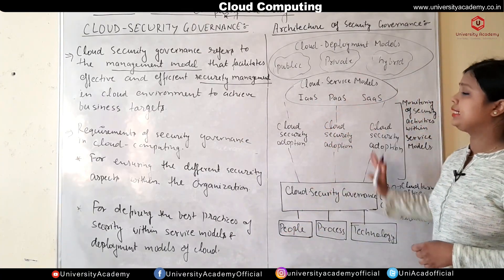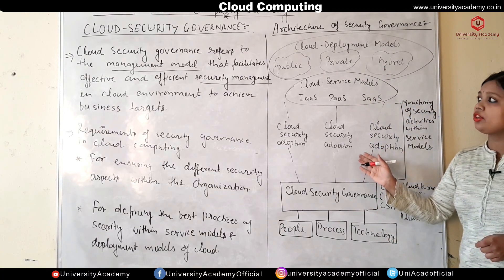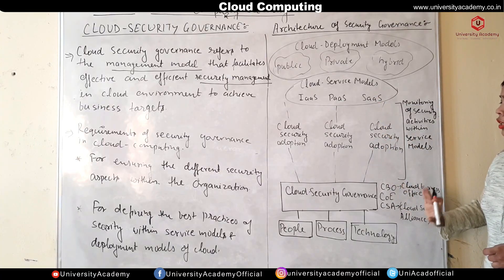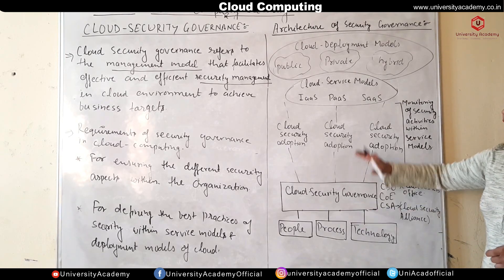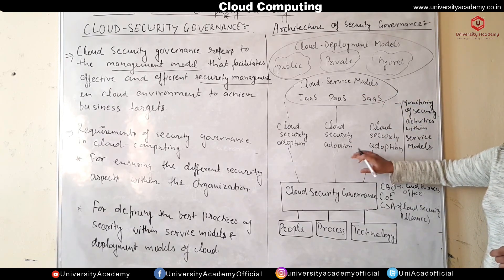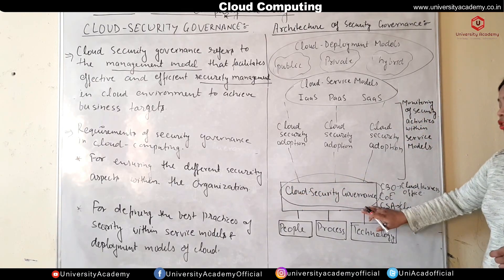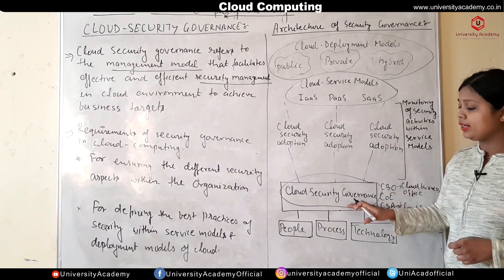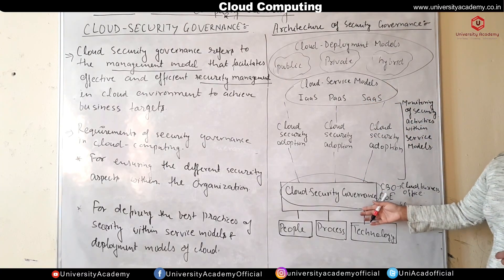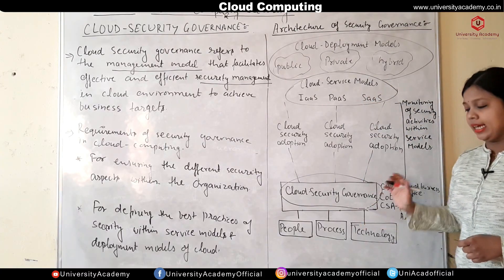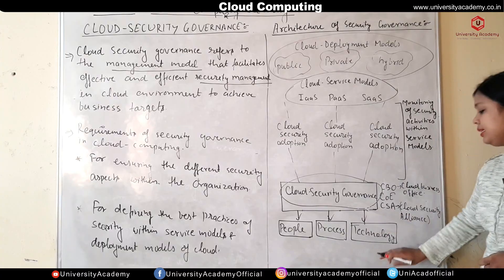Now let's talk about the architecture. I have drawn a simple architecture for Cloud Security Governance. Here is Cloud Security Governance — this is the central monitoring model. This is linked up and this is the help of monitoring. The actual monitoring is done by the governance team, which will monitor the different entities and models involved, and what measures are applied and what is the outcome. The governance is basically connected with people, process, and technologies.